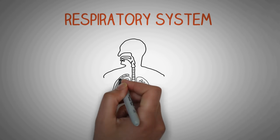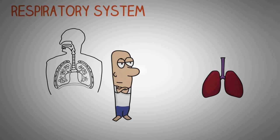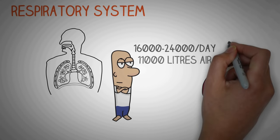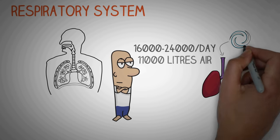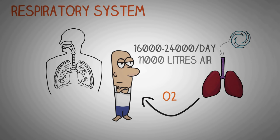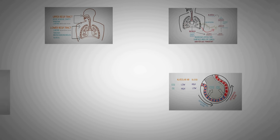In this video we will study about the respiratory system. The human respiratory system is one of the most vital organ systems of the body. We breathe about 16,000 to 24,000 times per day, which exchanges about 11,000 liters of air with the atmosphere. In this process, the oxygen of the atmospheric air is delivered to the human body, which is then utilized by all the tissues, and carbon dioxide produced by the human body is exported to the lungs and exchanged with the atmospheric air.